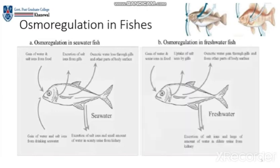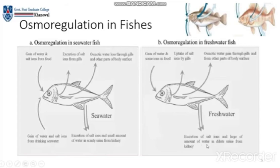Osmoregulation in freshwater fish: the fish gains some ions and water through food and mouth uptake. Salt ions are absorbed by the gills. Excess water and salt ions are excreted through gills and other body surface parts, and a large amount of dilute urine is excreted from the kidney.